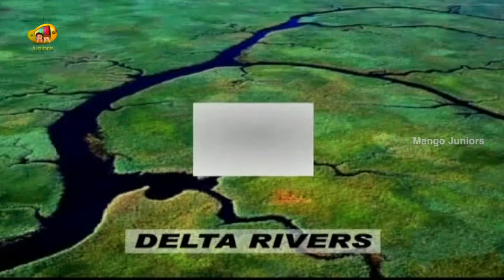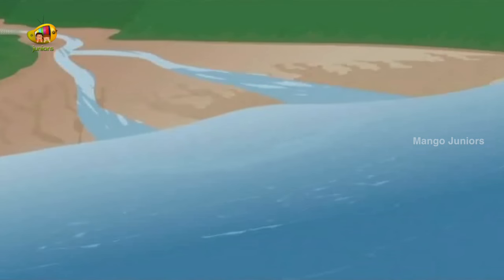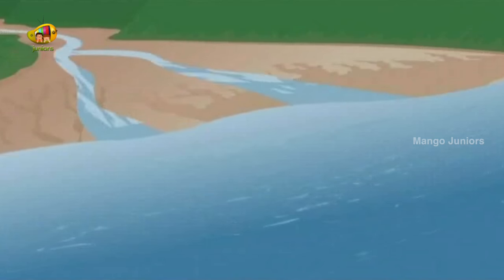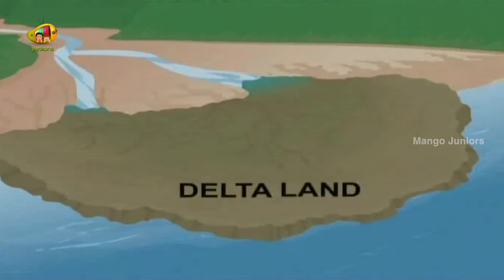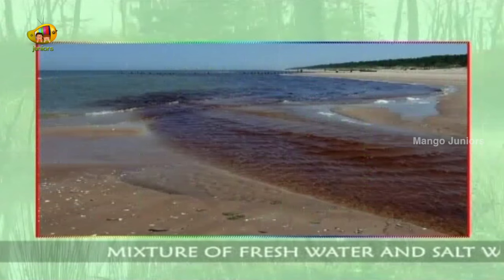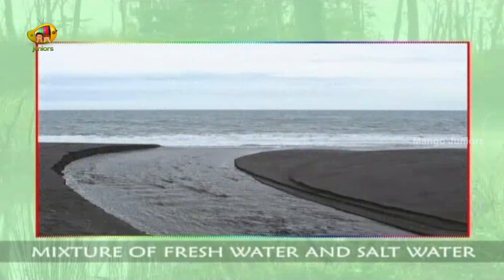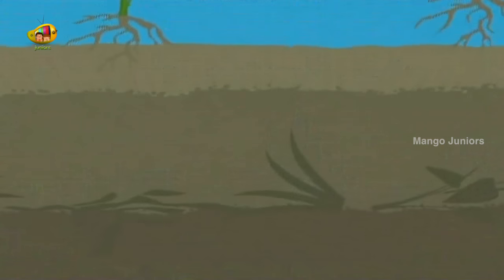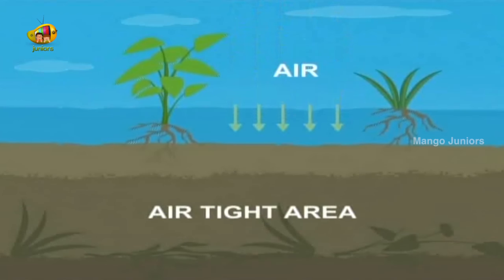River deltas often play a major role in conserving the wetland biome. When a river meets the sea, the water slows down and drops its sediment. This forms a flat area of land that grows out from the shore, known as a delta. It often contains a rich mixture of fresh water and salt water wetland, and these are sometimes used for farming. The dead plant matter here does not decay easily as the water-locked ground stops air from entering, creating an airtight area.